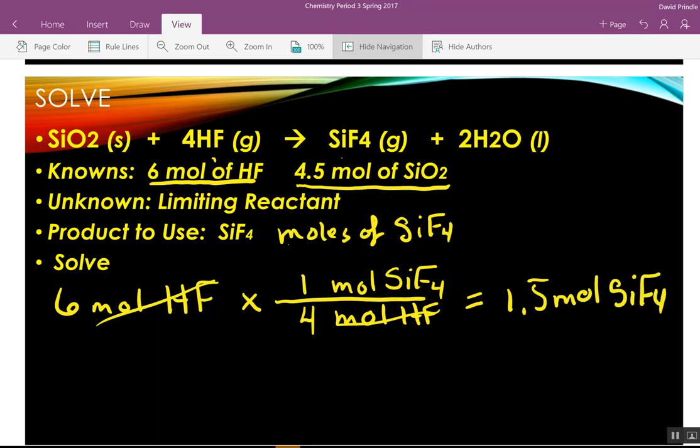So, what we did is we said, let's start with six moles of hydrogen fluoride. How much silicon tetrafluoride will that make? And we'll make a mole and a half.